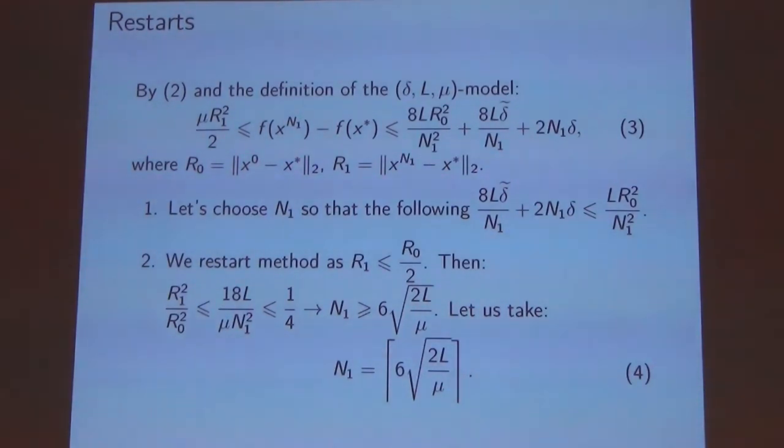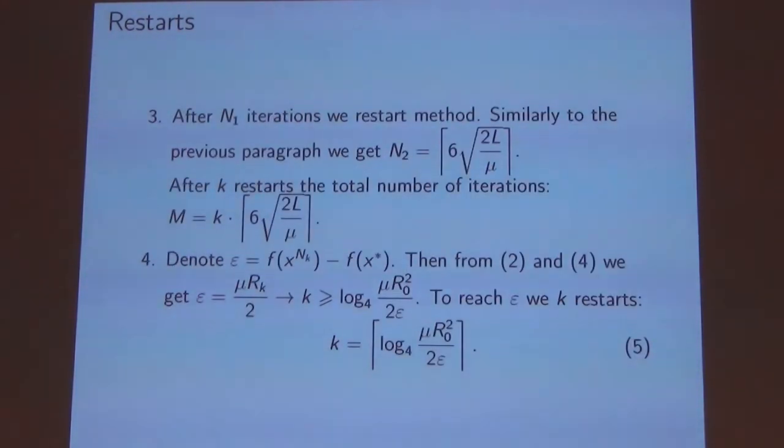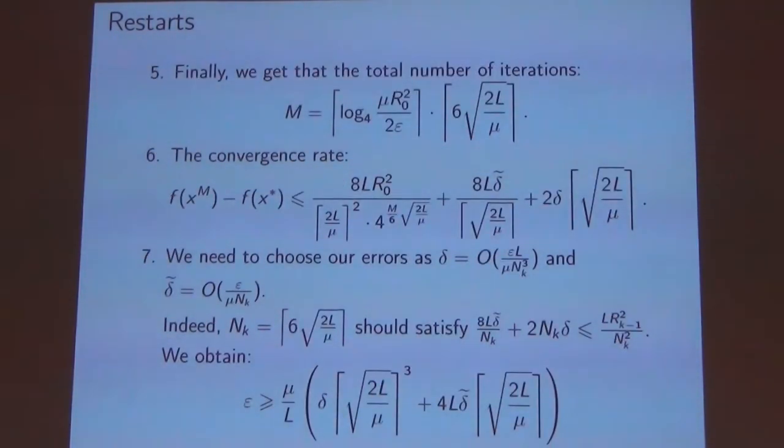Then using the rate of convergence we obtain the number of iterations on the first restart. Actually we found out that on extra restarts the number of iterations stays the same, it's Nk. Then using the rate of convergence we obtain the number of iterations.